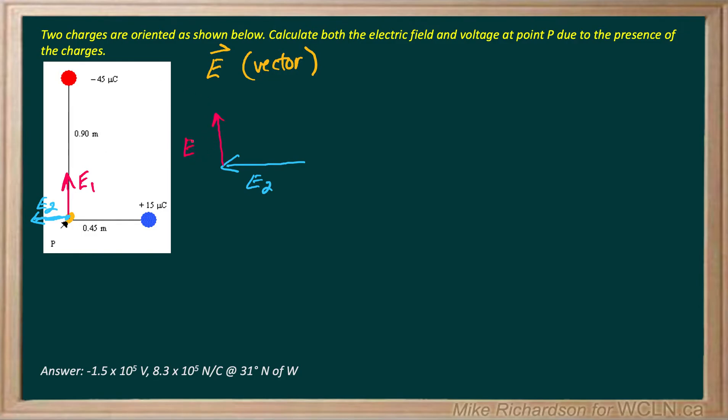And that will give me my total electric field which I'll denote in yellow here. So my total electric field will be like that and I'll put two arrowheads on it to denote the resultant. I'm looking for my total electric field and I also want to find the direction of it, the angle.